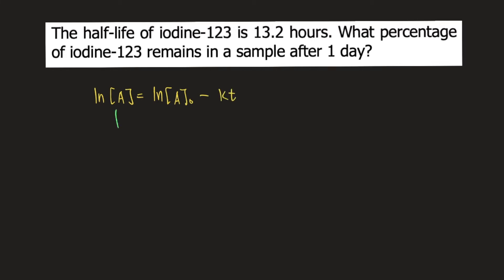A here is your final or remaining concentration or final amount. A₀ is your initial amount. k is the rate constant, and t is time.